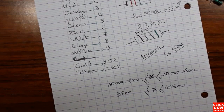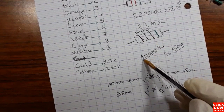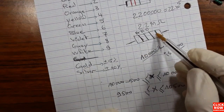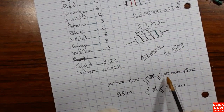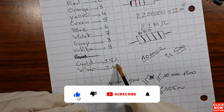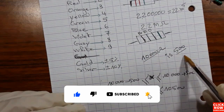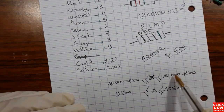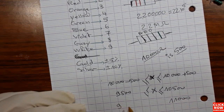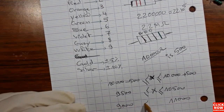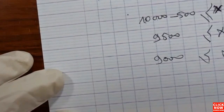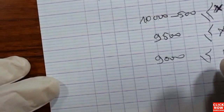The resistor is correct even if the value decreases or increases by 500, because we have the gold color tolerance. If the fourth color is silver, we apply 10% tolerance — 10% of 10,000 ohms is 1,000 — so the range becomes 11,000 and 9,000. This is how you measure a resistor using the color chart.